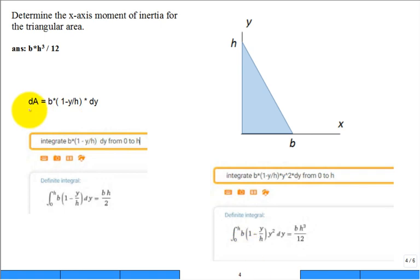So, is this the equation I wrote for dA? Is it b times 1 minus y over h times dy? And then if we just put that inside the integral dy, from 0 to h, Wolfram alpha comes back 1/2 base height.